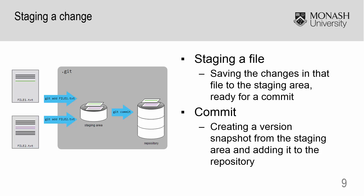It is time to commit. The first thing you need to do is to pick and choose which changes you want to save to your commit, effectively moving it into the staging area. Then you will get all the changes in the staging area and commit it, effectively forming a snapshot of your work.